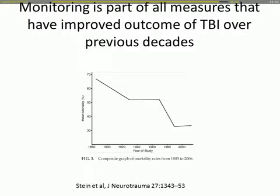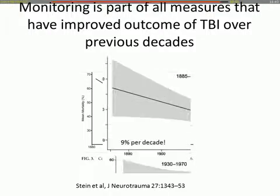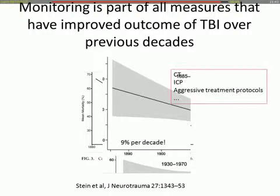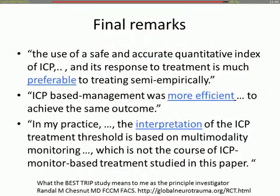What we should recognize is that ICP monitoring is part of what we've been doing over the past decade, and that outcomes after traumatic brain injury have improved — at approximately a 9% per decade rate. CTs, ICP monitoring, and aggressive treatment protocols are all part of that improvement, so it will be very difficult to isolate what is harmful and what is beneficial.